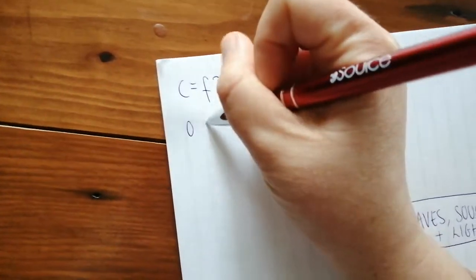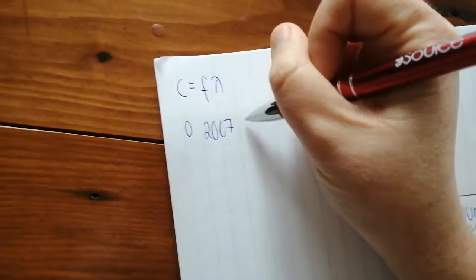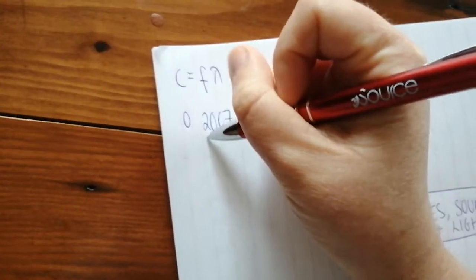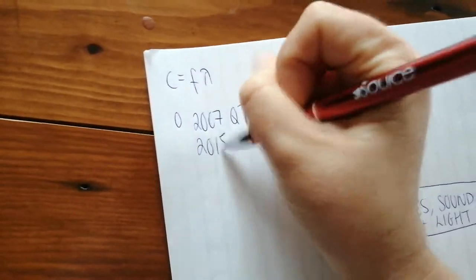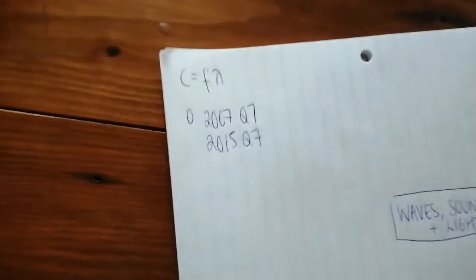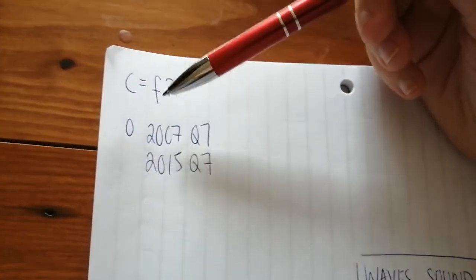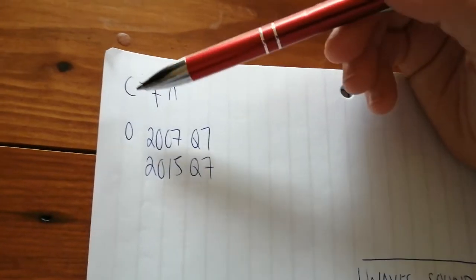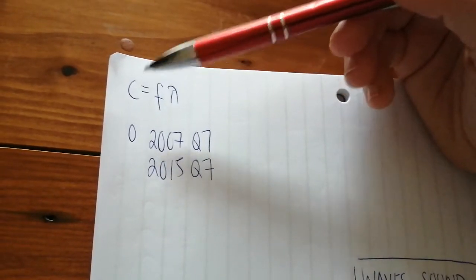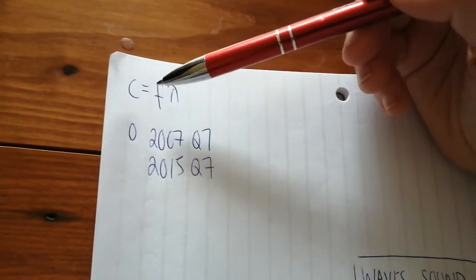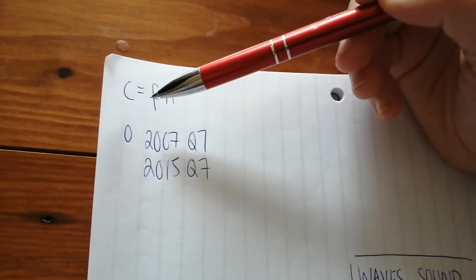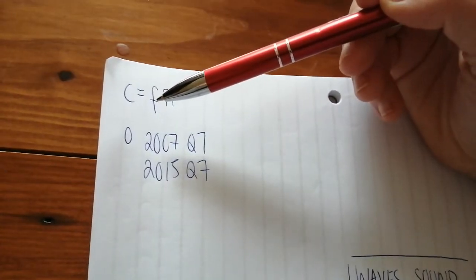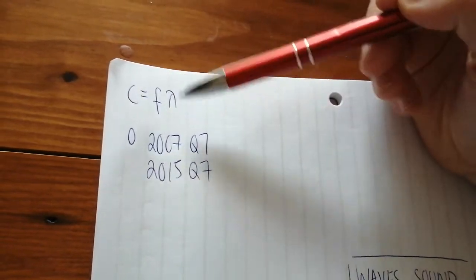So we have ordinary level 2007, question 7, and ordinary level 2015, question 7. You're less likely to get a full question using this formula in higher level. However, it does often come up that you will need, let's say, the frequency in a calculation. You have to work out the frequency first using this formula.